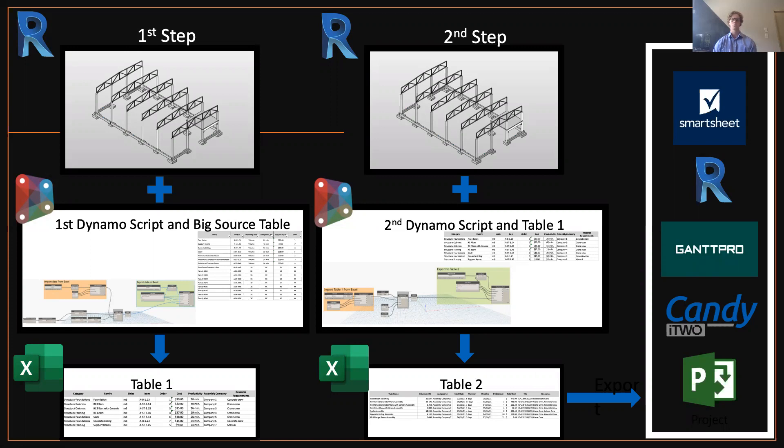This system utilizes the collaborative planning of the last planner system and uses the BIM model as the main information source, with the 3D BIM model and Gantt charts as the final outputs.